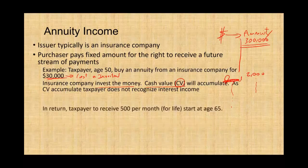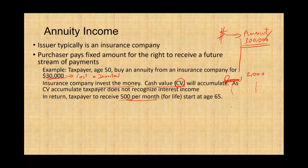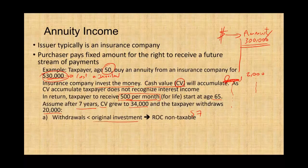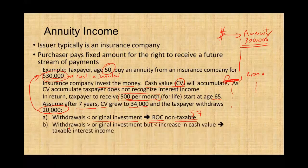In return, the taxpayer is to receive $500 per month for life starting at age 65. This individual is 50 years old now — they put $30,000 away, and once they're 65, the insurance company will pay them $500. From age 50 to age 65, the policy will accumulate cash, but you don't have to worry about that cash. Let's assume after seven years — so we're at age 57 — the cash value grew to $34,000 and the taxpayer decides to take $20,000 out. If the withdrawal is less than the original investment of $30,000, this is considered a return of capital (ROC) and is a non-taxable event. If the withdrawal is greater than the original investment but less than the increase in cash value, then we have taxable interest income. So if you withdrew more than $30,000 but less than $34,000, the difference between them is interest income.